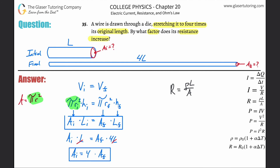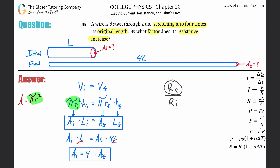We need to compare the final resistance to the initial resistance. Whenever we talk about factors, we take the final state divided by the initial state. So to find the factor by which resistance increases, I'll compute R_f divided by R_i. For example, if the final value were 100 and the initial were 50, then 100/50 = 2, so it increased by a factor of 2. That's the whole idea.